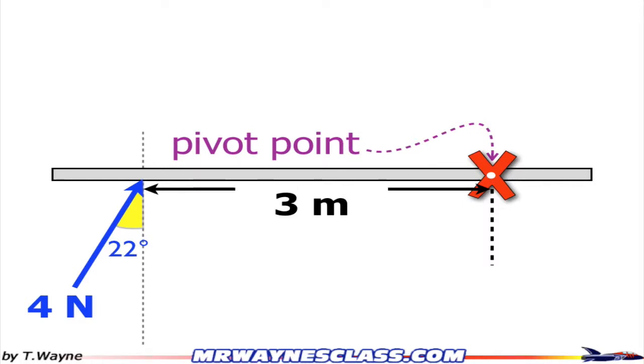This is the video solution to one of the simple example problems with torque. I've got a gray beam, and it's got a 4 newton force applied to it at 22 degrees with the vertical.